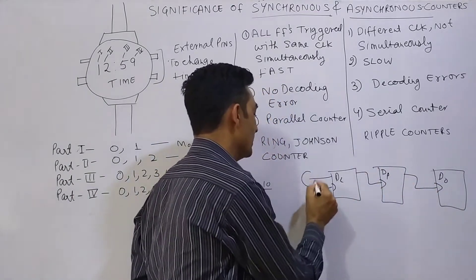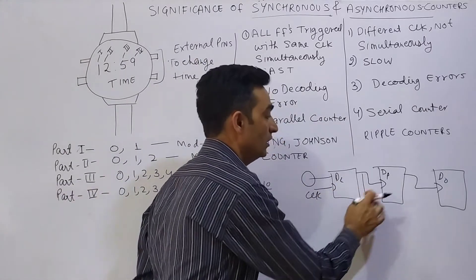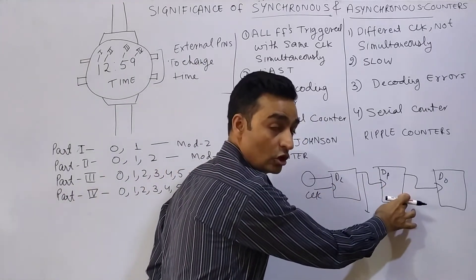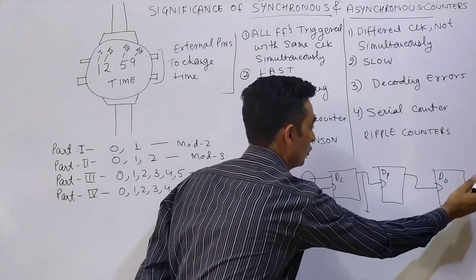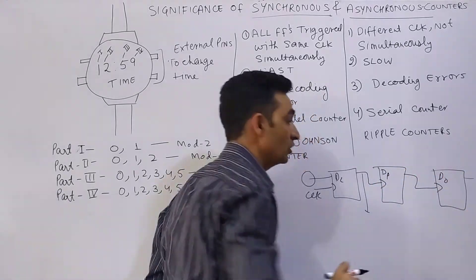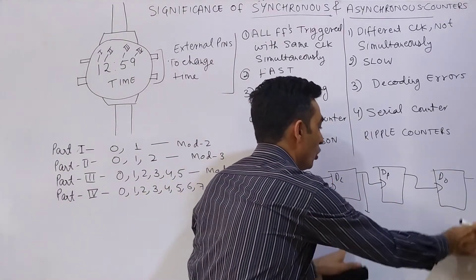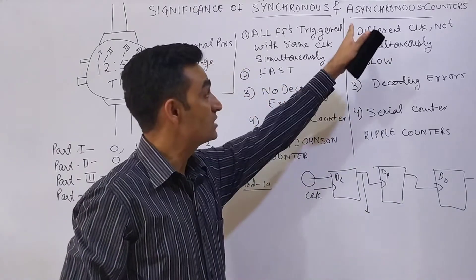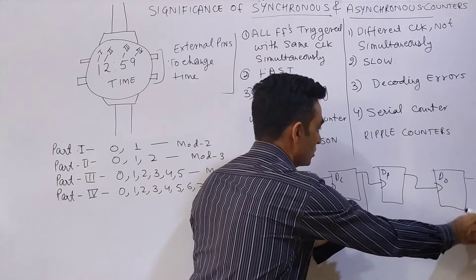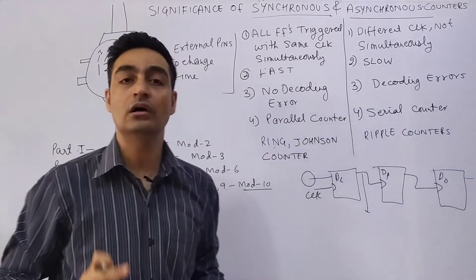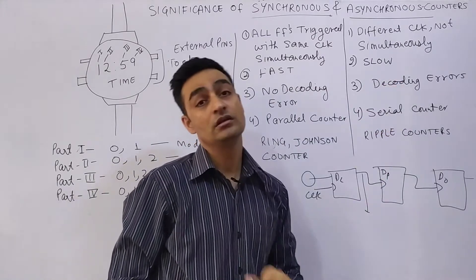Even if you apply input, after the first clock you will get output from the first flip-flop only — the subsequent flip-flops will not yet show changed output. The changed output from all flip-flops will only be obtained after three clock pulses. So depending upon the number of flip-flops involved in an Asynchronous Counter, it will take that many clock pulses to generate the final output. That is why Asynchronous Counters are considered slow.